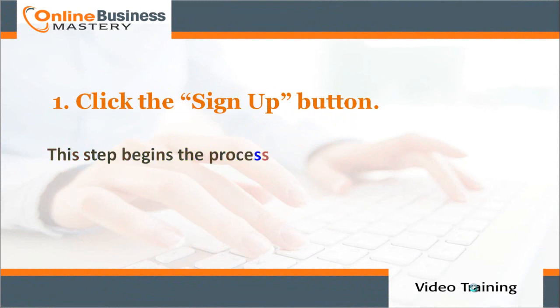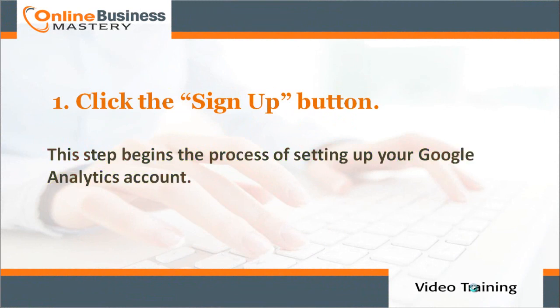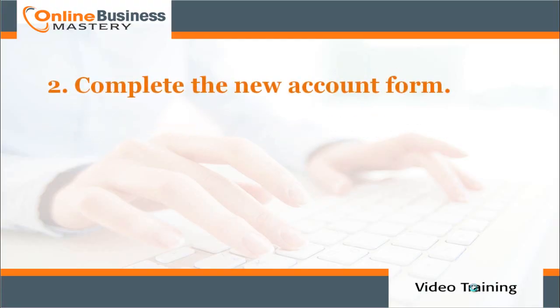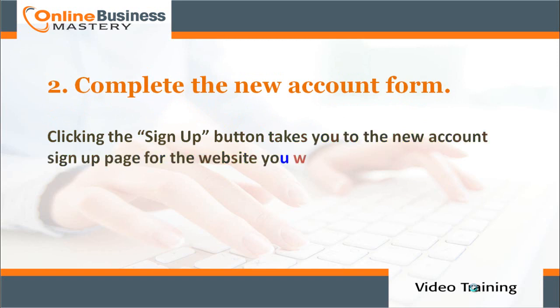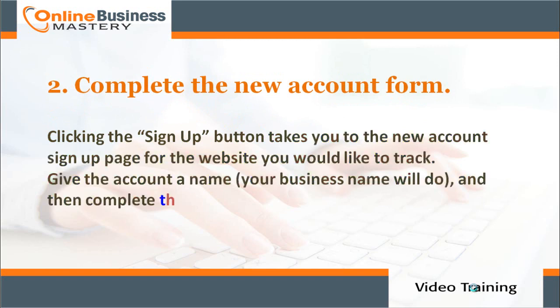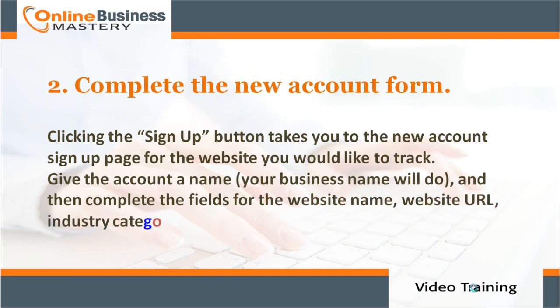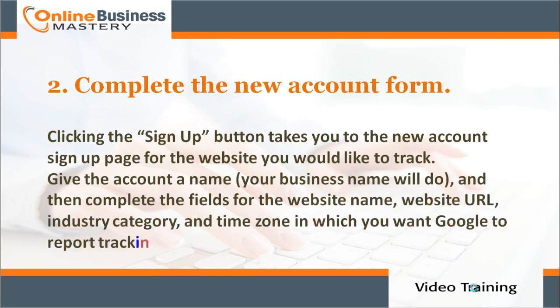Clicking the Sign Up button begins the process of setting up your Google Analytics account. Number two: complete the new account form. Clicking the Sign Up button takes you to the new account sign-up page for the website you would like to track. Give the account a name — your business name will do — and then complete the fields for the website name, website URL, industry category, and time zone.